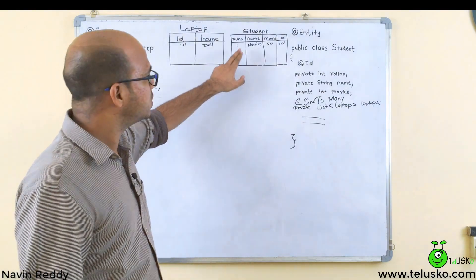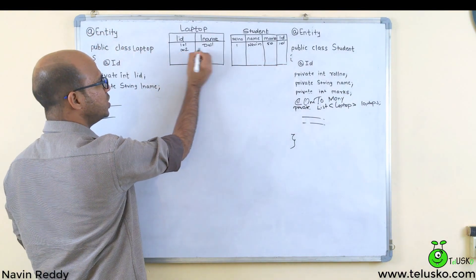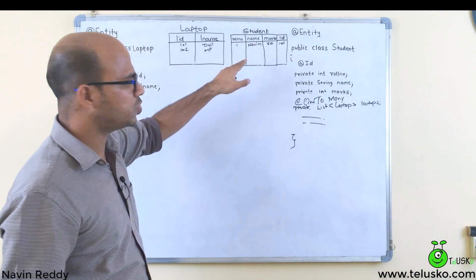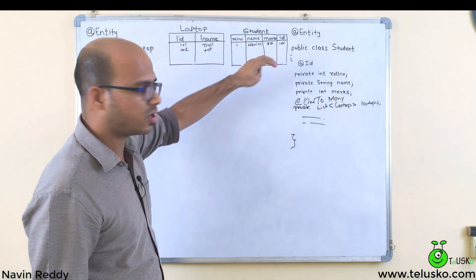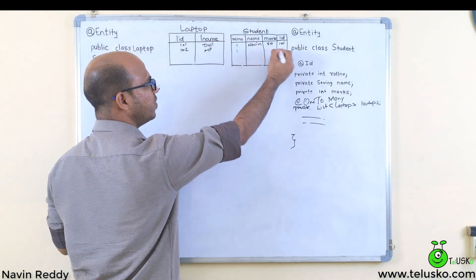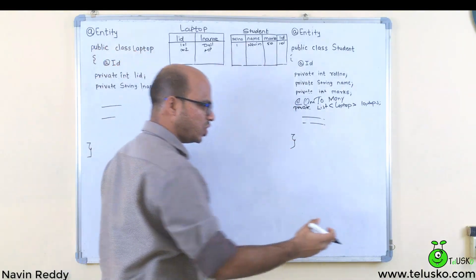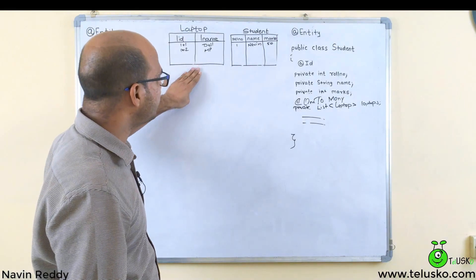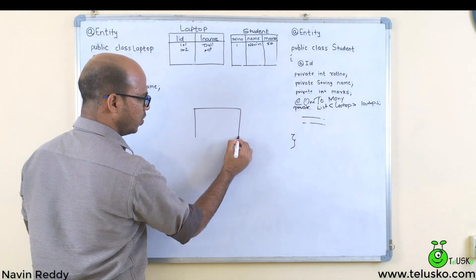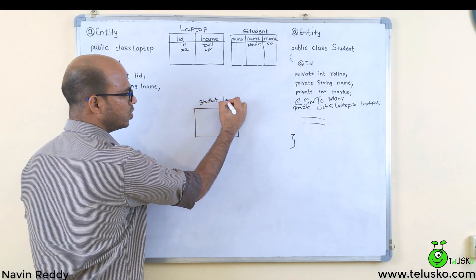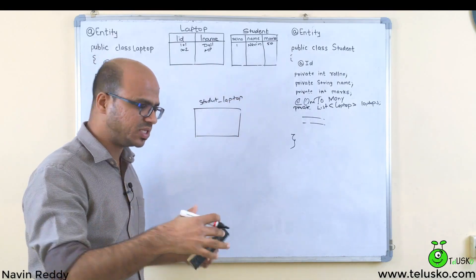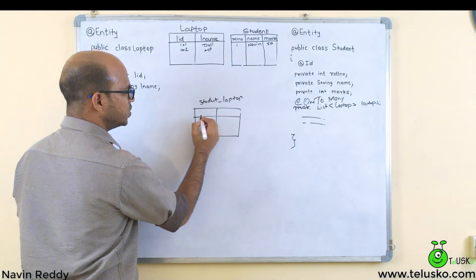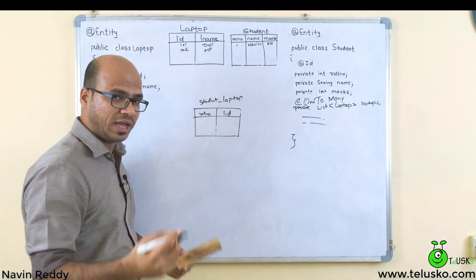But how do you update the tables for one-to-many? You can't store multiple laptop IDs in one column, and you can't repeat the same roll number since it's a primary key. The solution is to keep the student and laptop tables independent and create a third mapping table called student_laptop.